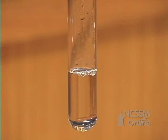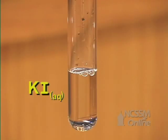In the halogen-halogen single displacement reaction, we will react an aqueous solution of potassium iodide with an aqueous solution of chlorine.